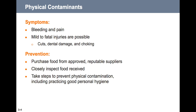Symptoms of a physical contaminant include bleeding and pain; mild to fatal injuries are possible, as well as cuts, dental damage, and choking. Your main prevention of physical contaminants includes purchasing food from approved reputable suppliers, closely inspecting food received, and taking steps to prevent physical contamination, including practicing good personal hygiene.